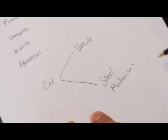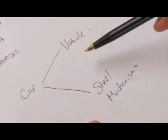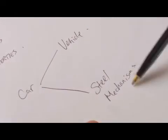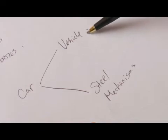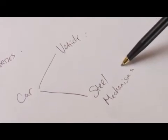So we see how this relationship with car can now have different taxonomies because it has a relationship to vehicle and it also has a relationship to steel mechanisms.